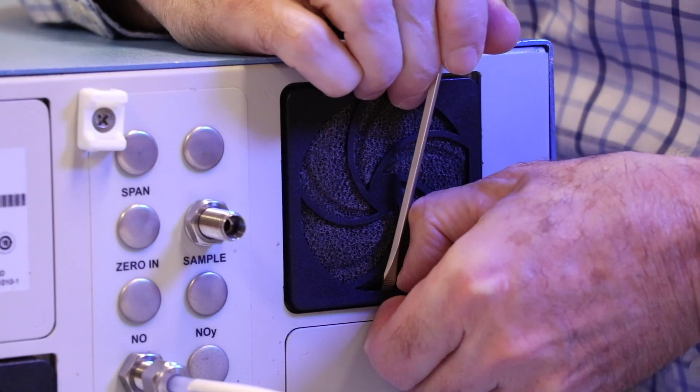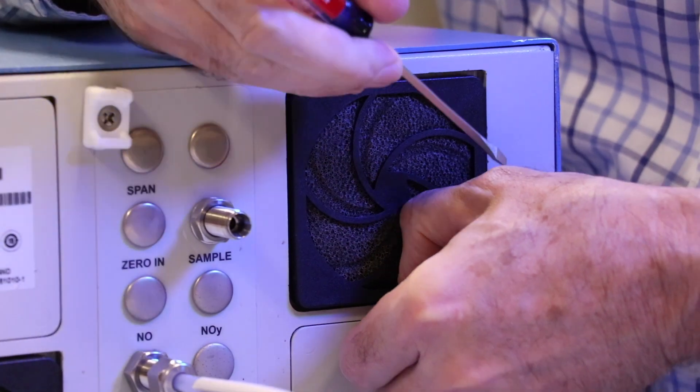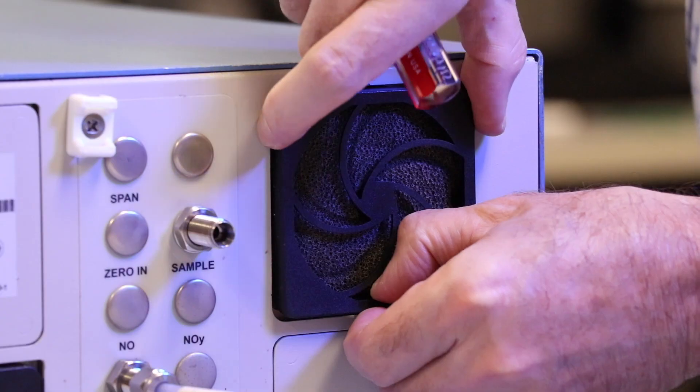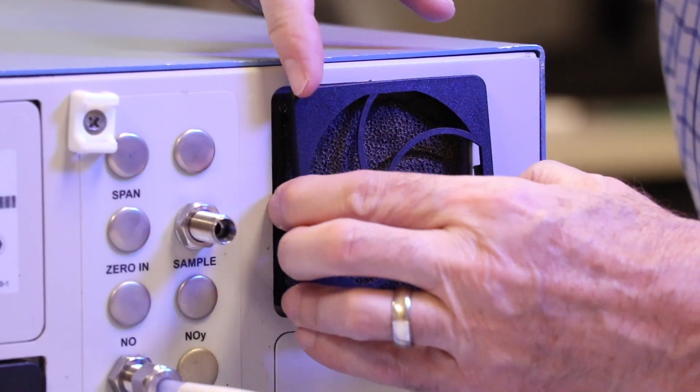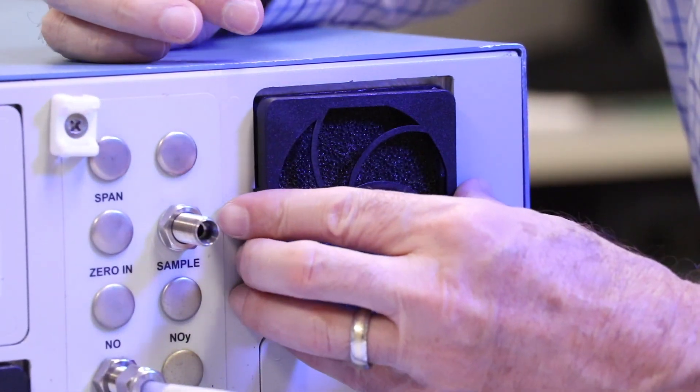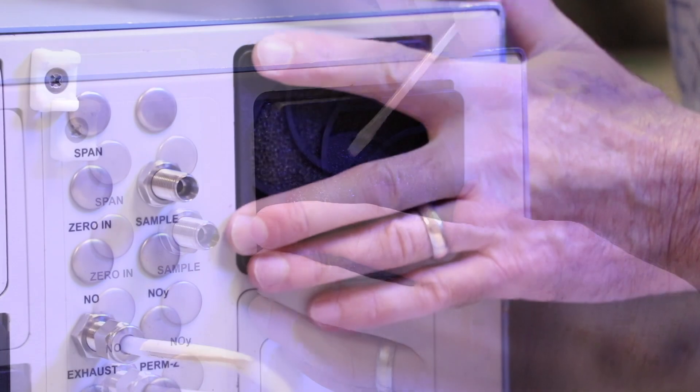Start by removing the fan guard from the fan and remove the filter. Refer to filter replacement on page 7-6 in the manual. The manual recommends cleaning the filter with warm water and letting it dry, or blowing the filter with clean compressed air. We recommend replacing the filter yearly.